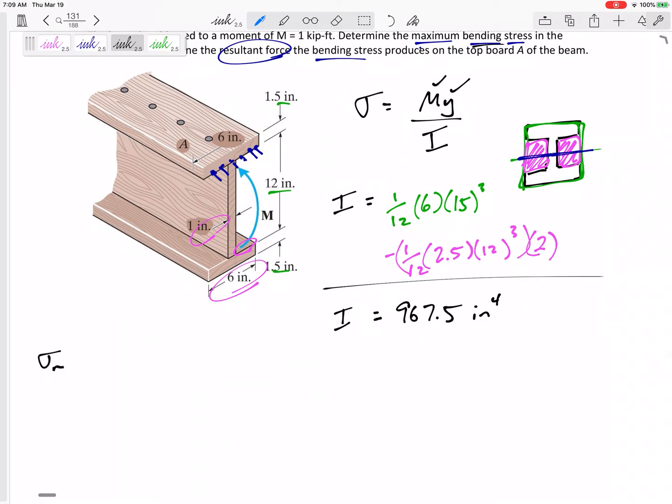Alright, so the maximum would be M. So one kip foot. Alright, we'll have to think about those units. Y.